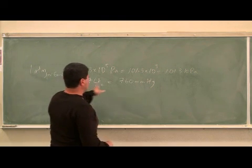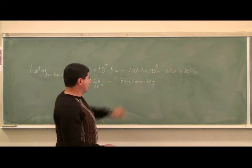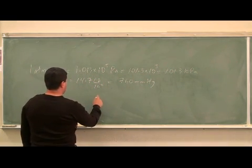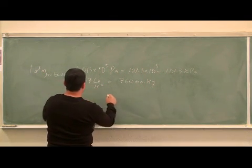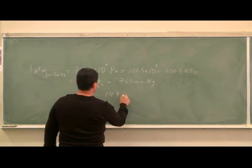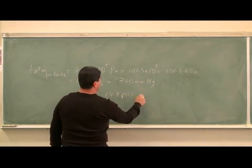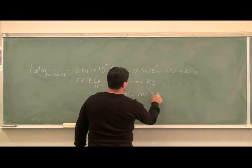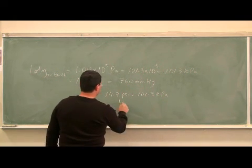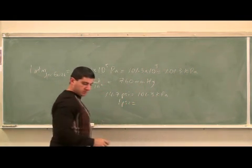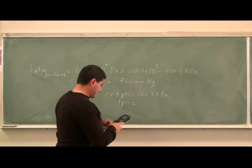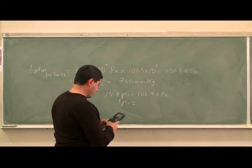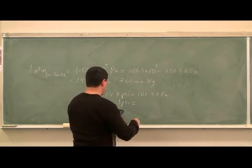We could, from this, we could learn what's the conversion between them. So if I were to say, if I divide this, we say 14.7 psi is equal to 101.3 kilopascals. That means one psi is equal to what? So let's just do that so we can have a little conversion between them. 101.3 divided by 14.7, 6.89.